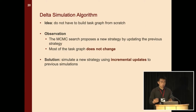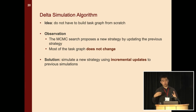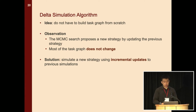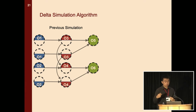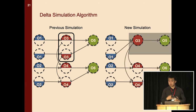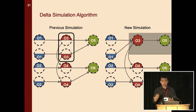To further accelerate the simulation procedure, we propose the delta simulation algorithm. The idea is that you don't have to build the task graph from scratch each time. Because the MCMC search algorithm proposes a new strategy by changing a single operator in the original strategy, most of the task graph does not change from one strategy to the next. Our solution is to simulate a new strategy using incremental updates. For example, if you want to change how we parallelize the third operator, instead of building a new task graph from scratch, you just need to recompute the operators in the affected area.